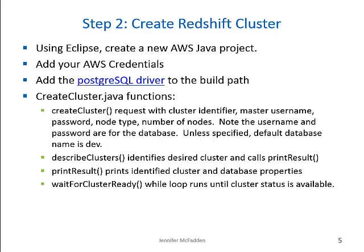We'll now move on to step 2, creating a Redshift cluster. This tutorial assumes you have Eclipse installed along with the AWS plugin. Open Eclipse and create a new AWS Java project. After adding your credentials, add the PostgreSQL driver to the build path. Note Amazon requests using Postgres 8.4-703, which is not the latest version of the Postgres driver. Create a new class called createCluster.java and copy the code provided. CreateCluster has several functions. The first is createCluster, which creates a cluster with the identifier name, master username, password, database name, node type, and number of nodes. Note that the username and password are for the database, not the node itself, and if a database name is not specified, the default dev is created.